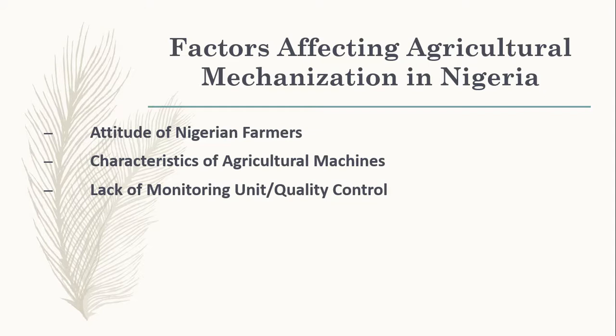Number three, lack of monitoring units. The agricultural division of government has been showing serious neglect in terms of monitoring and quality control. Number four, political instability. Most political administrations may come up with very helpful strategies that are yielding results, but immediately the political period changes and new people are elected into office, they abandon those projects and cause the whole agricultural development to collapse.